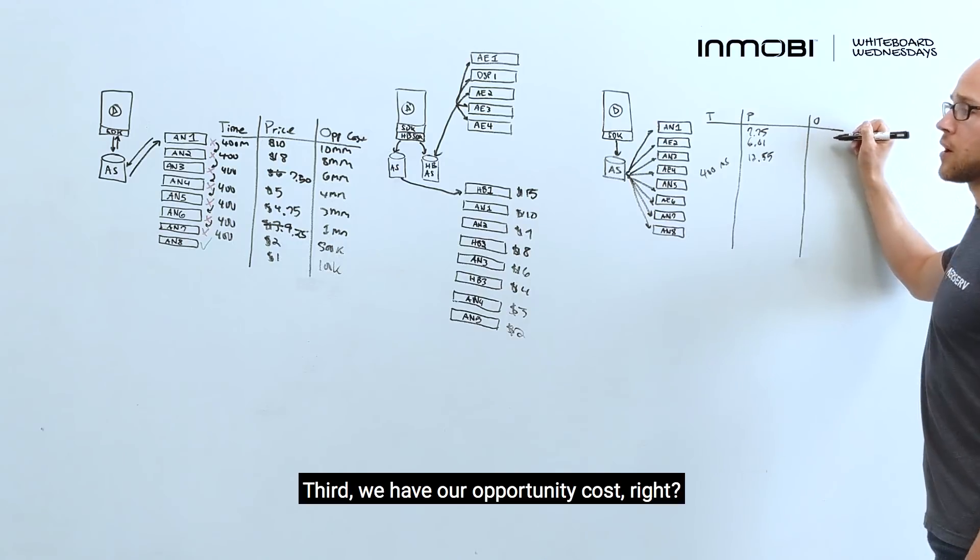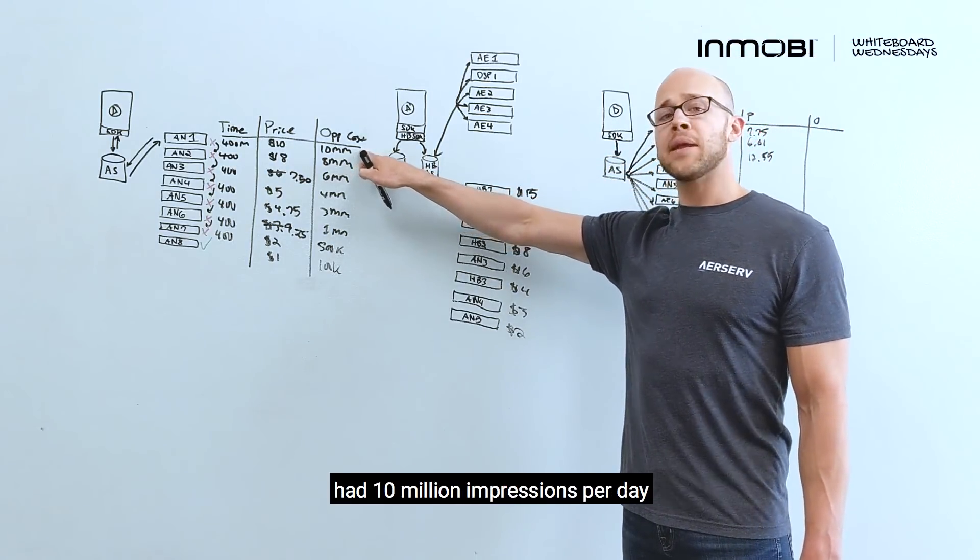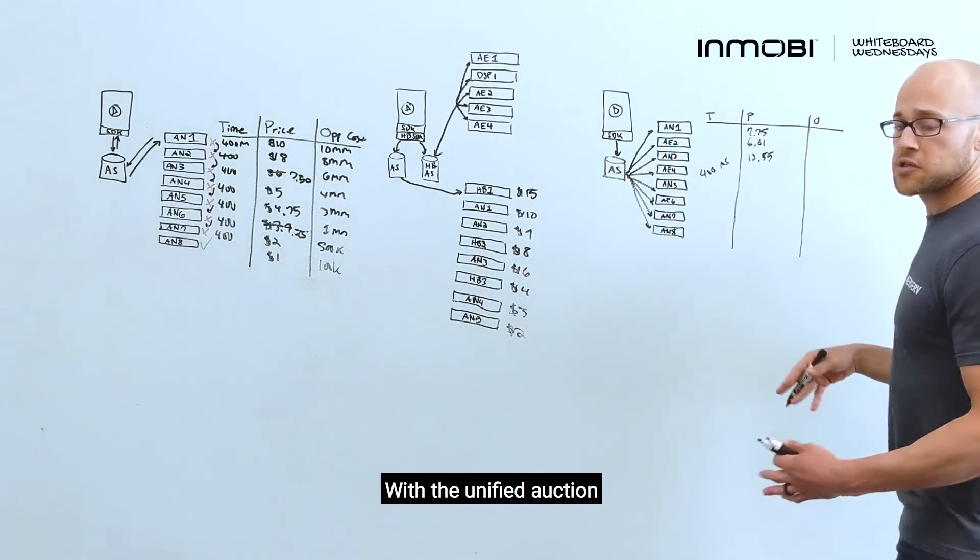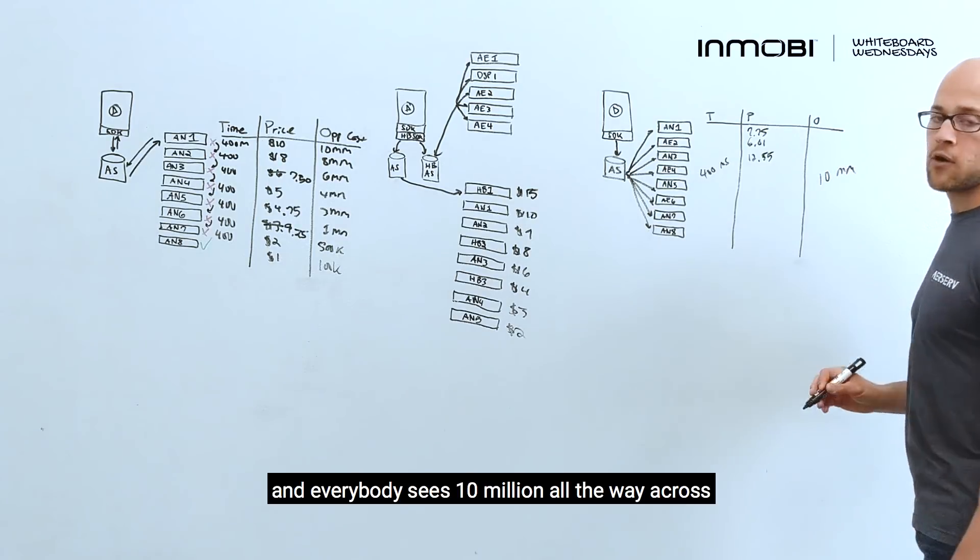Third, we have our opportunity cost. Over here, partners, the guys at the top of the chain had 10 million impressions per day, and at the bottom, they had 500,000. With the unified auction, we've flattened that, and everybody sees 10 million all the way across.